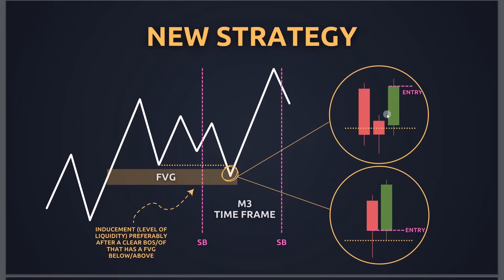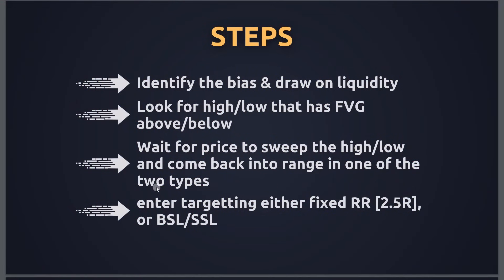To summarize as a checklist: first, identify the bias and draw on liquidity — this will be your target. Then look for a high or low that has a fair value gap above or below it. Wait for price to sweep that high or low and come back into the range using one of the two entry types. Finally, enter the trade targeting either a fixed reward-to-risk — I recommend 2.5R or 3R — or any buy-side or sell-side liquidity, or the drawn liquidity identified in step one.